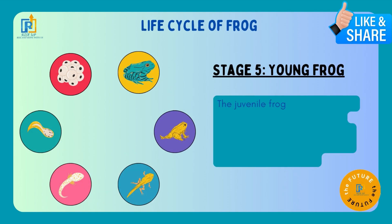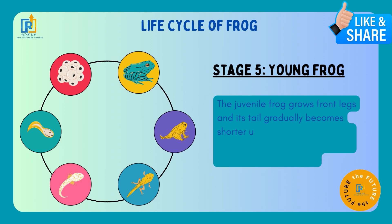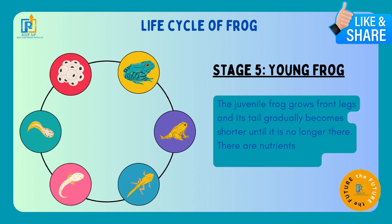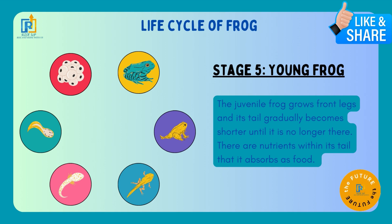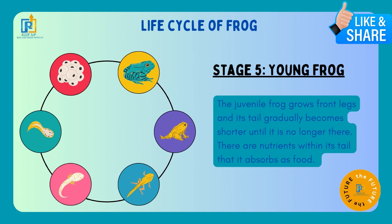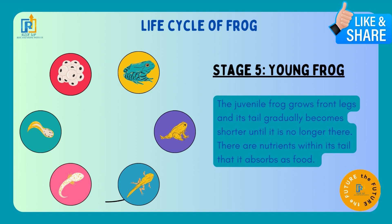Stage 5: Young Frog. The juvenile frog grows front legs and its tail gradually becomes shorter until it is no longer there. There are nutrients within its tail that it absorbs as food. Jaise jaise frog bada hota hai, uski front legs aane lagti hain aur uski jo tail hoti hai woh choti se choti ho jati hai. Aakhir mein tail ki nutrients frog absorb kar leta hai as food, aur ek din tail khatam ho jaati hai.